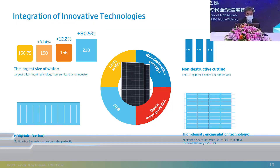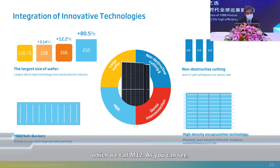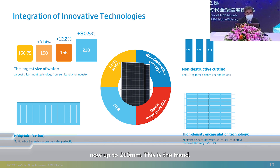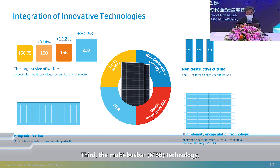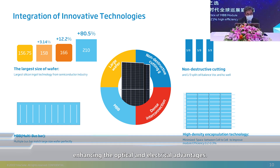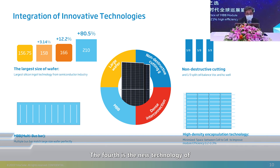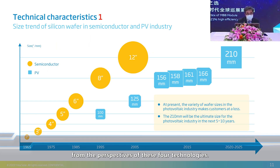We employ four key technologies. The first is the larger 210-millimeter wafer, which we call the M12. The wafer size went from 156 millimeters to 158, 166, and now up to 210 millimeters — this is the trend. Second, the module side optimizes cell welding technology by splitting the cell into three sections before making the module. Third, the multi-bus bar MBB technology, invented by Trina Solar, collects currents more evenly, enhancing optical and electrical advantages. The fourth is high-density encapsulation, where cells are connected in series.